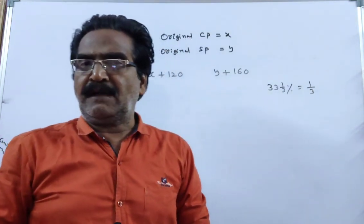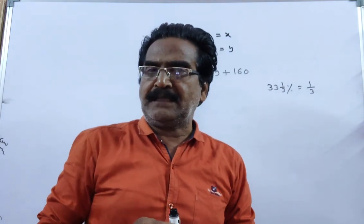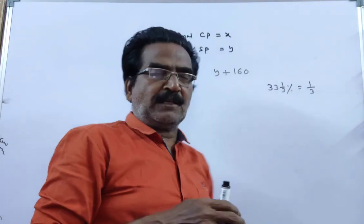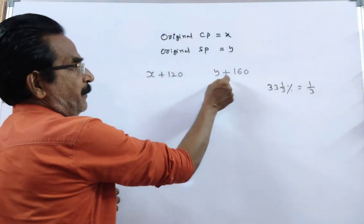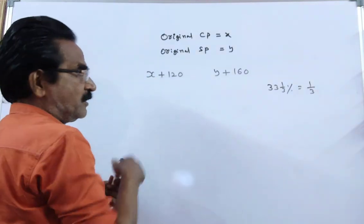Friends, if the profit is 1 by 3 of the cost price, then the sold price will be 1 plus 1 by 3, 4 by 3 of the cost price. So, this sold price, Y plus 160 is equal to 4 by 3 of this cost price.